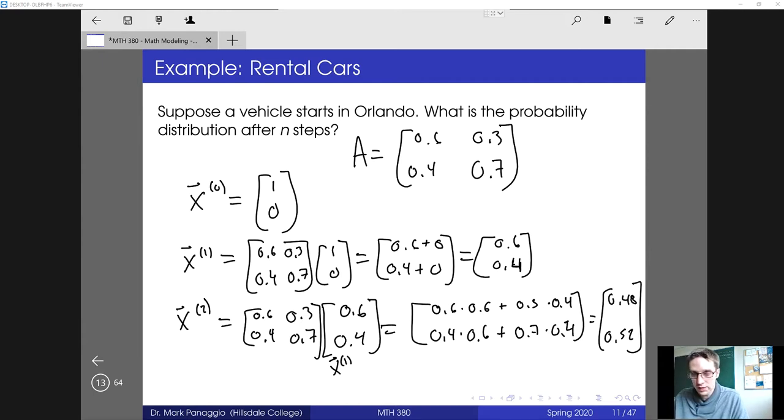And we could continue that process, but notice this difference equation, xn+1 equals A times xn. We actually found the analytical solution to that previously. xn is just A to the n times x0. And so what that means is, if I want to find the probability after n steps, I just need to multiply my initial state by the A matrix, a total of n times.